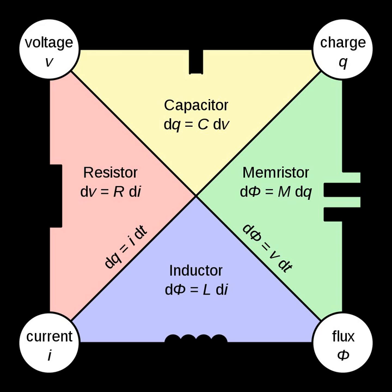Resistance R, measured in ohms, produces a voltage proportional to the current flowing through the element.